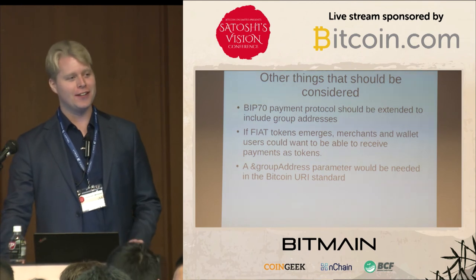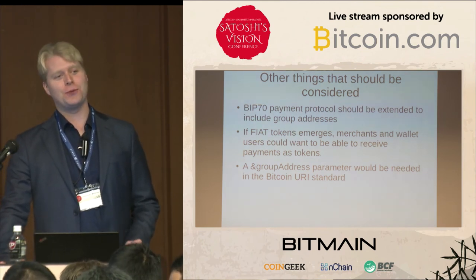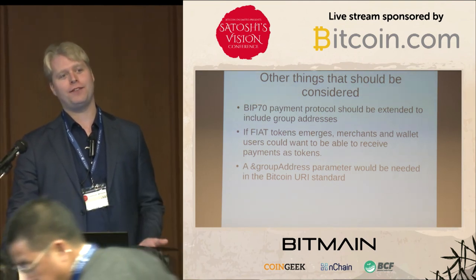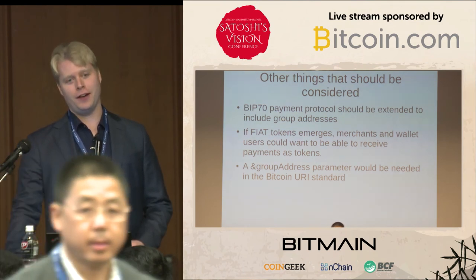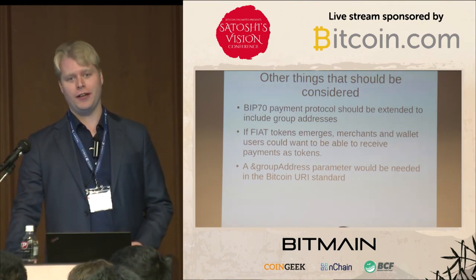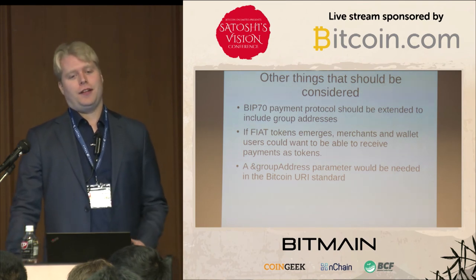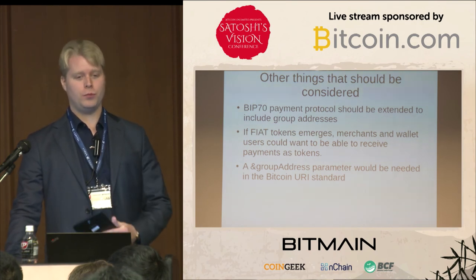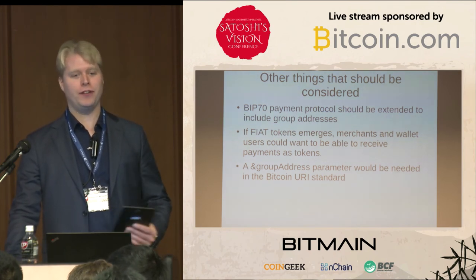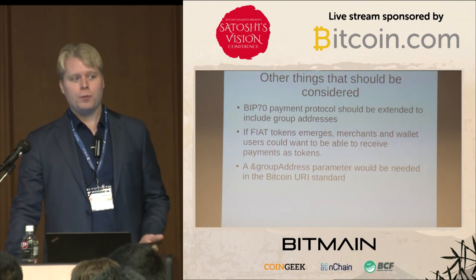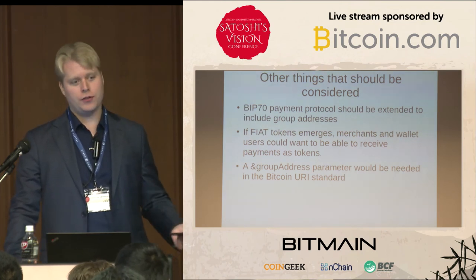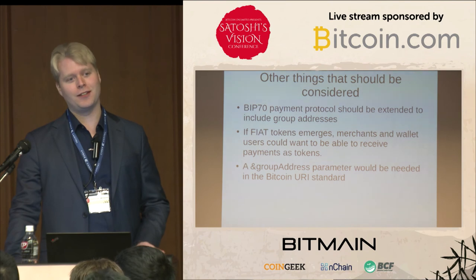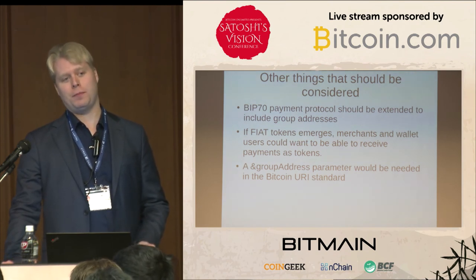If ICOs are going to pay out dividends, most of the tokens will probably sit in exchange wallets. For example, if Bitcoin.com Games would issue shares for the service and pay out dividends, then most of those dividends would probably go to big exchanges like CoinEX or Binance, and these exchanges need a good plan on how to handle that to make sure their users get paid the dividend.